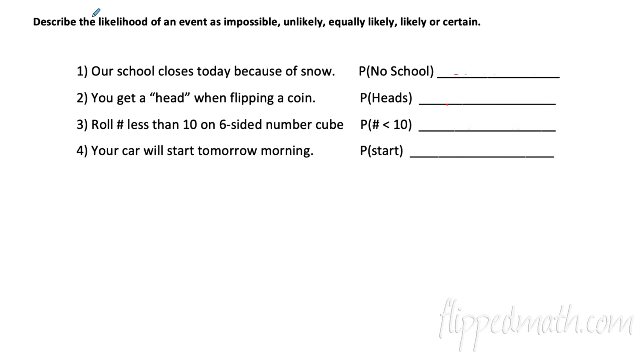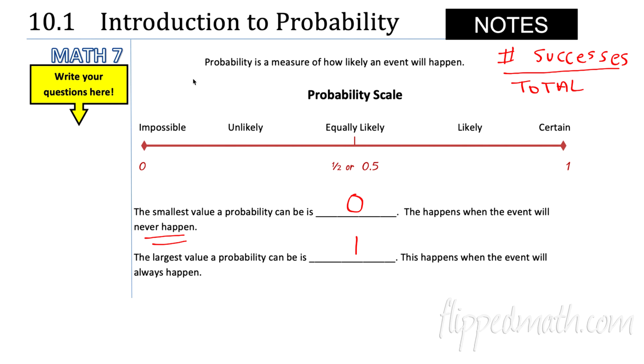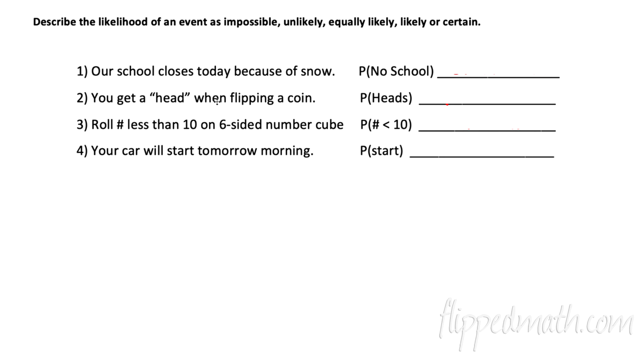Now we have some words that we can learn to help us out with this. We have the words impossible, unlikely, equally likely, likely, or certain. And you can look at a number line if you need some help there. That's how often it would happen. If you're towards one, that means it'll happen more than it will not happen. And if you're towards zero, it will not happen more than it will happen.